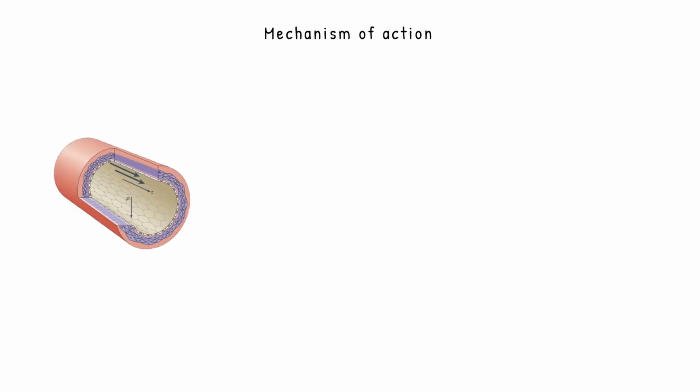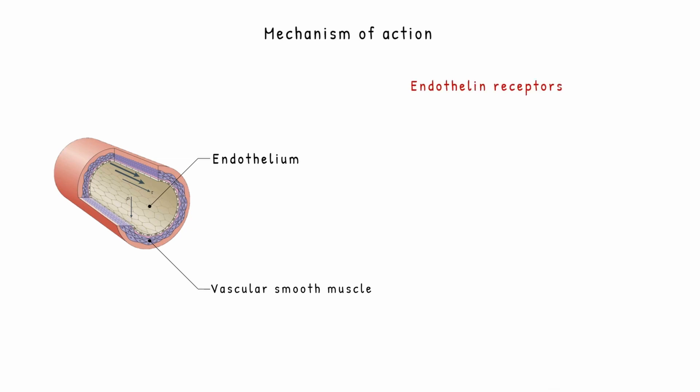Coming to mechanism of action — this is a pictorial representation of the pulmonary artery showing endothelial cells and vascular smooth muscle cells. This is where endothelin receptors are present. There are two types: ETA and ETB. Bosentan blocks both receptors but has a higher affinity towards ETA, and as a result it produces vasodilation, thereby decreasing blood pressure in the pulmonary artery.